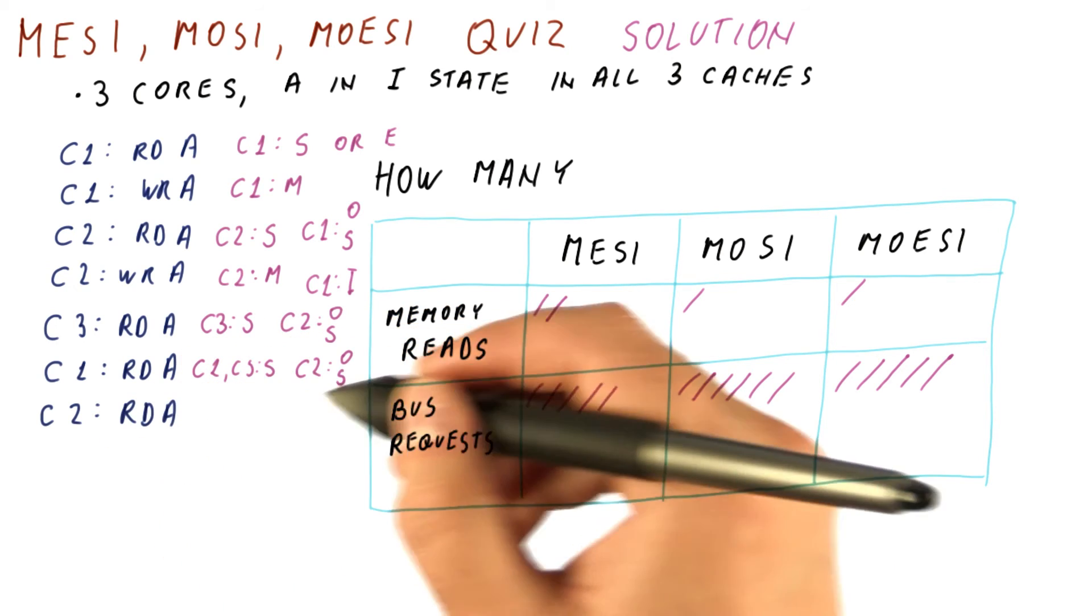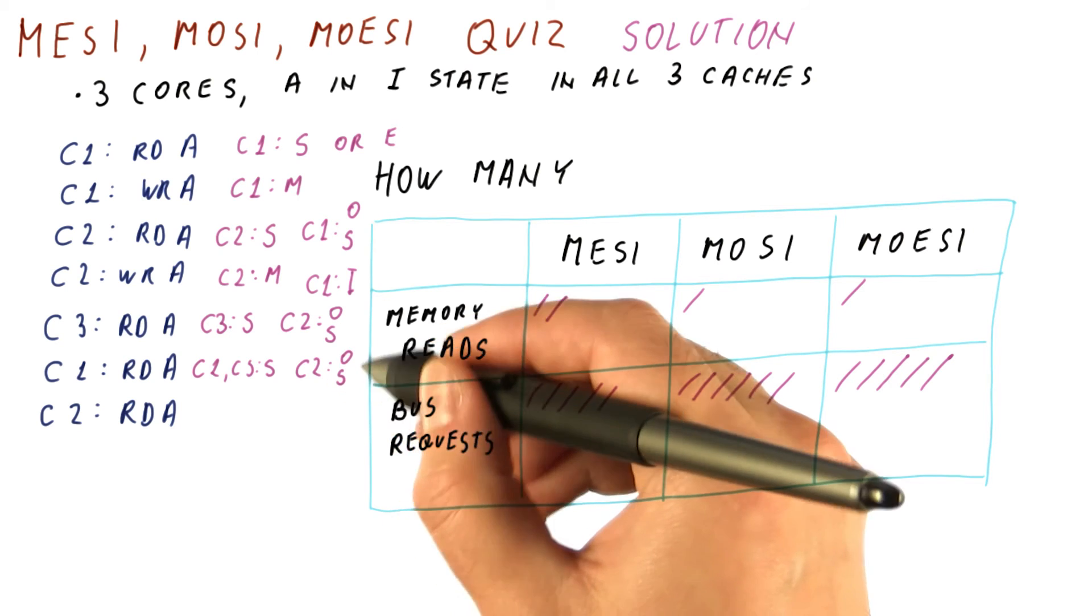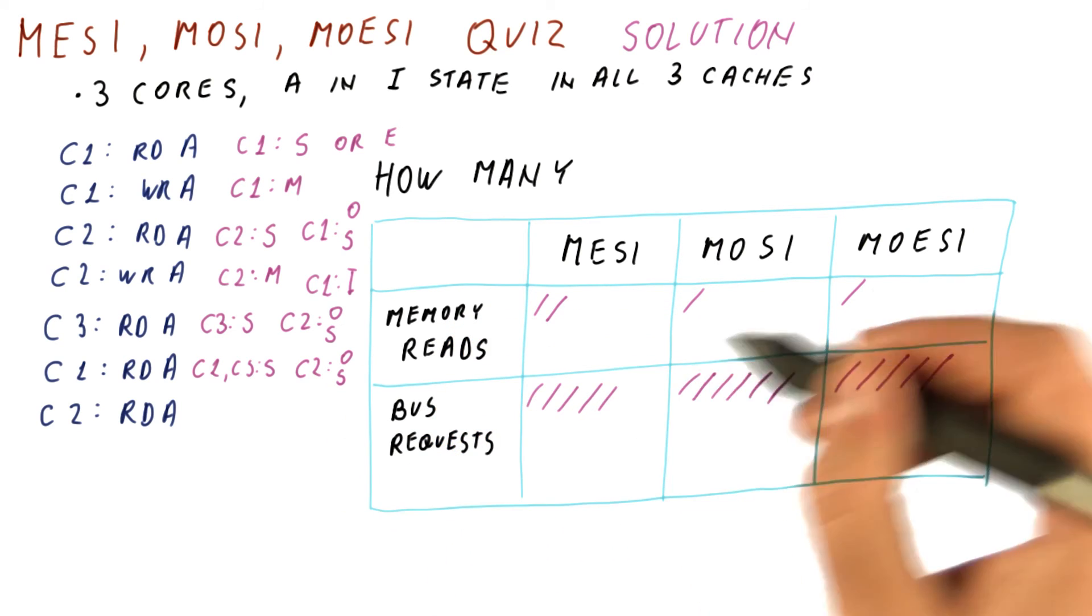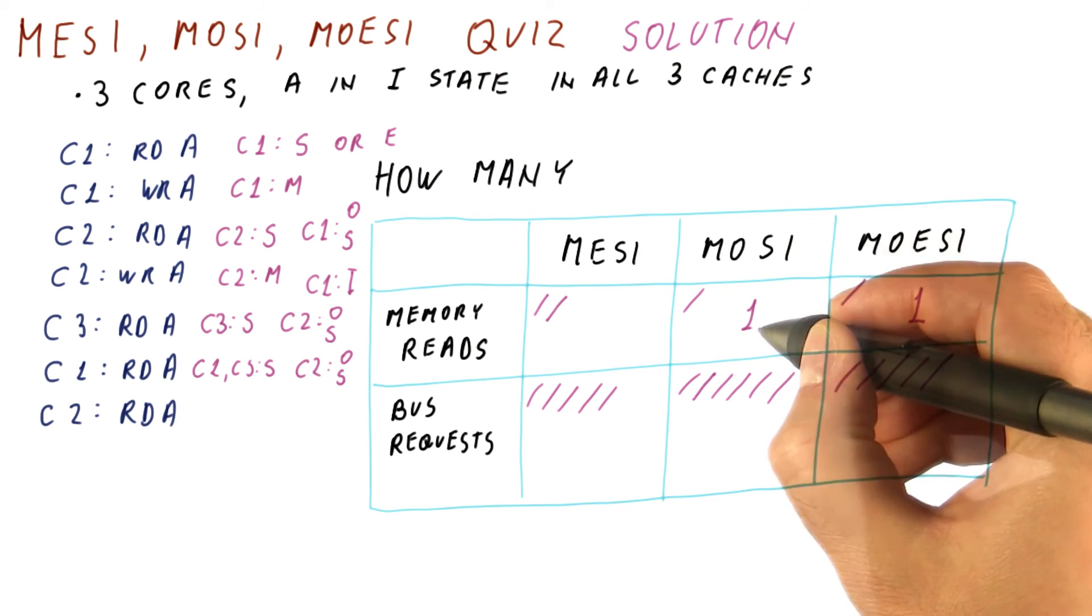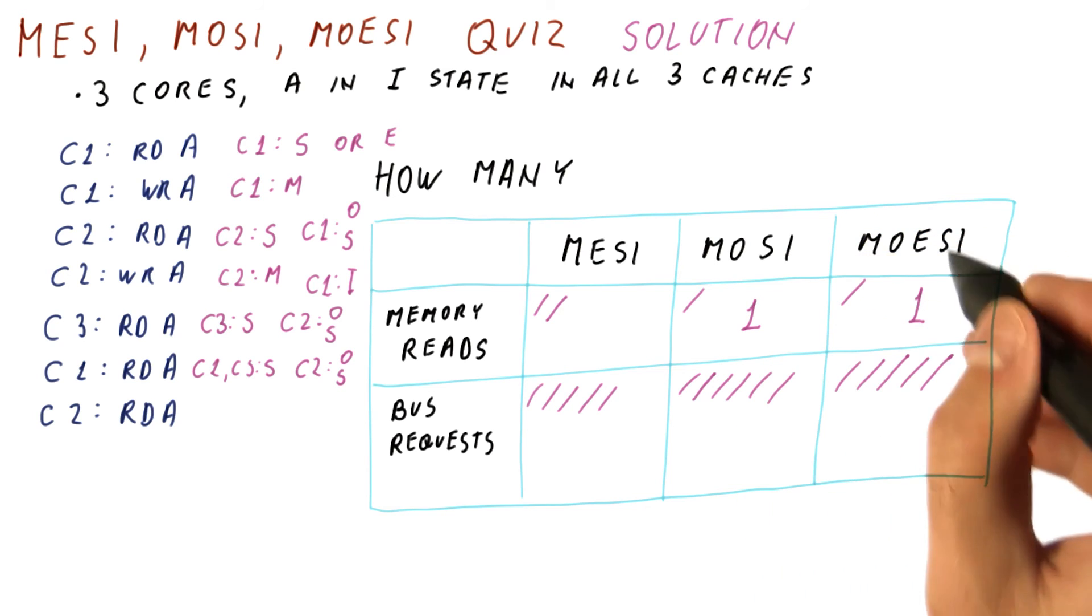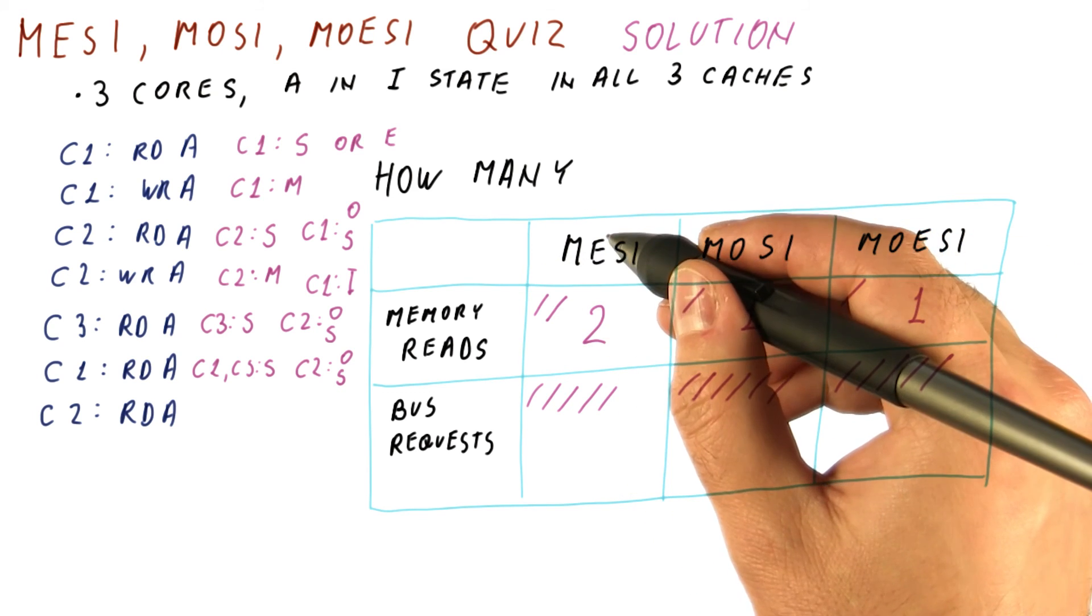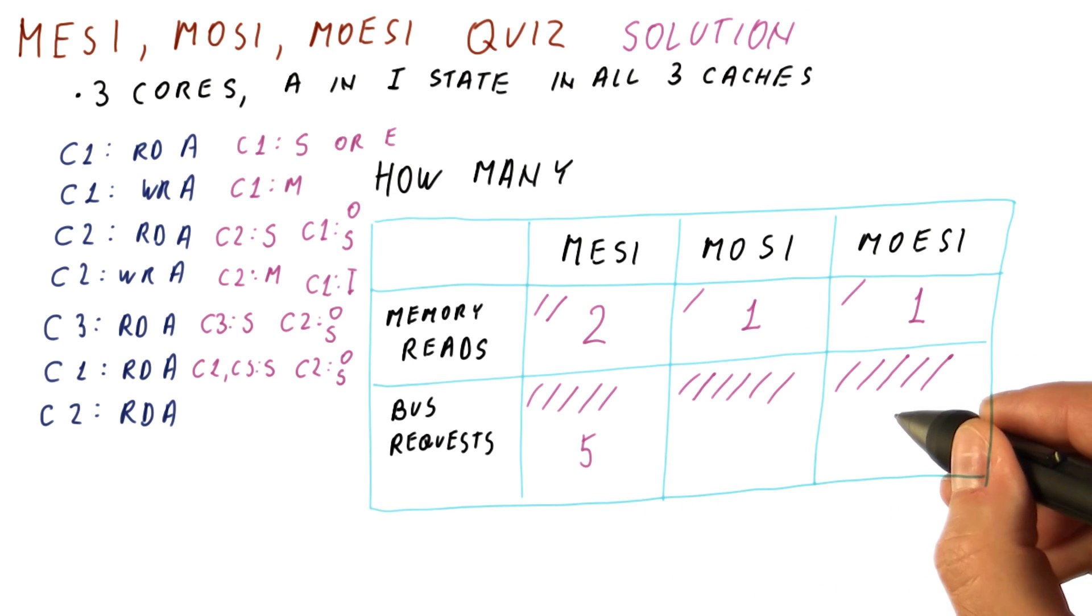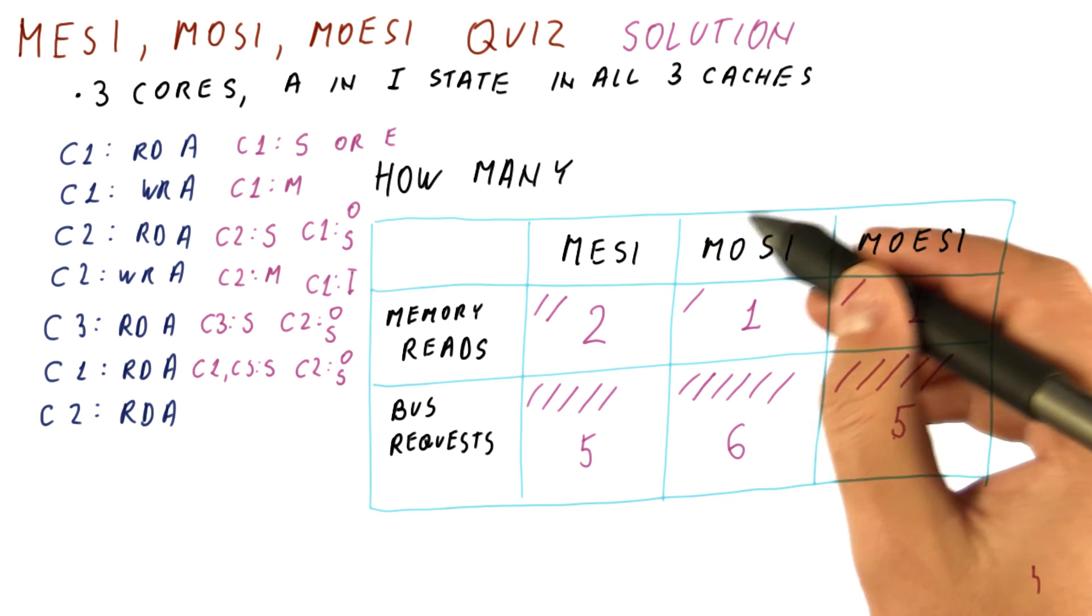Now C2 reads the block. Either way it can read the block because at this point it's either owned or shared. So there is no bus request nor memory read in any of these protocols. So overall, we have one memory read in protocols that have the O state, and two in the protocol that doesn't. For bus requests, we have five bus requests in protocols that have the exclusive state, and six bus requests in the protocol that doesn't.